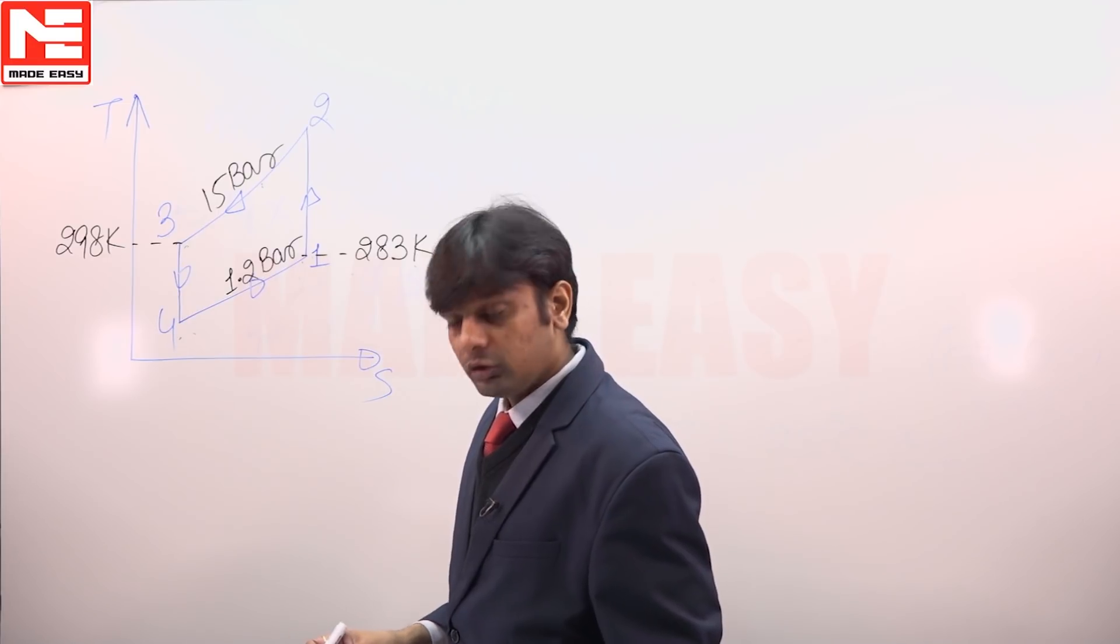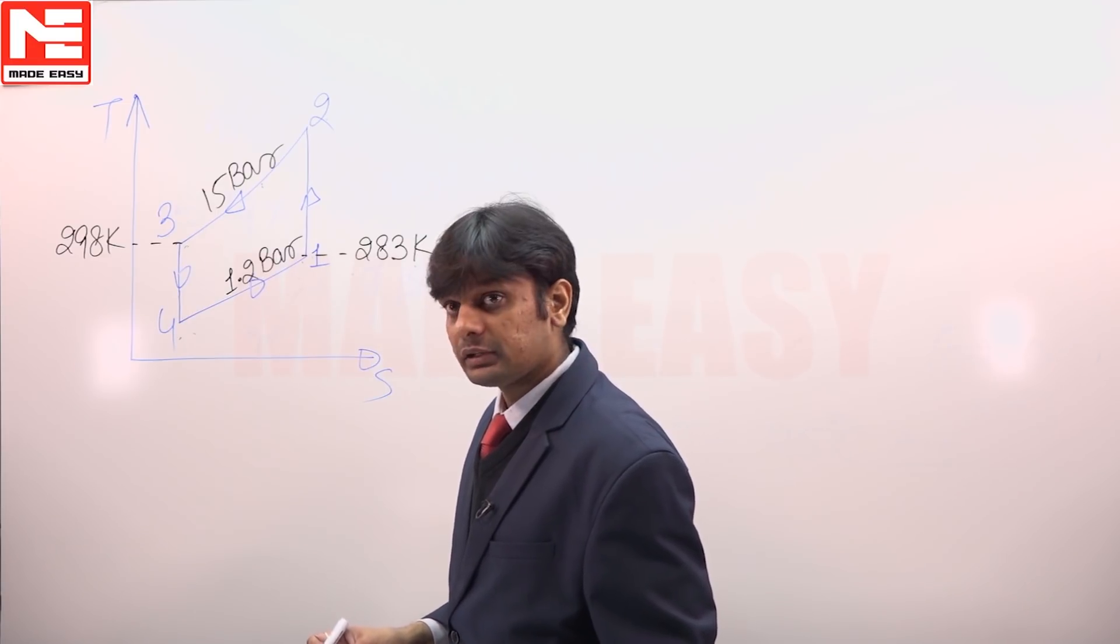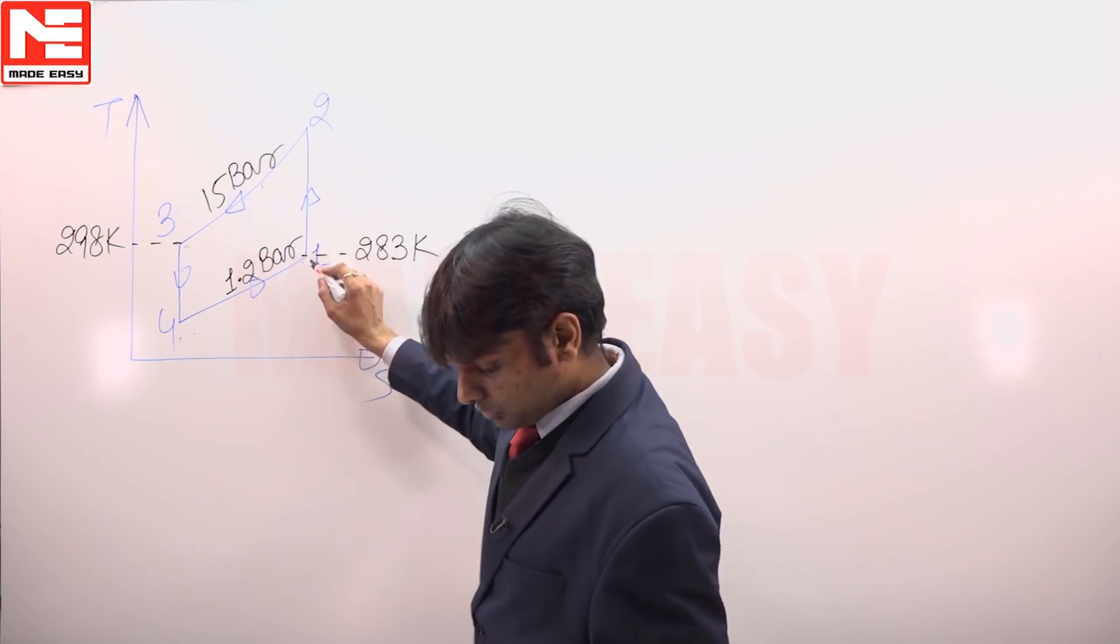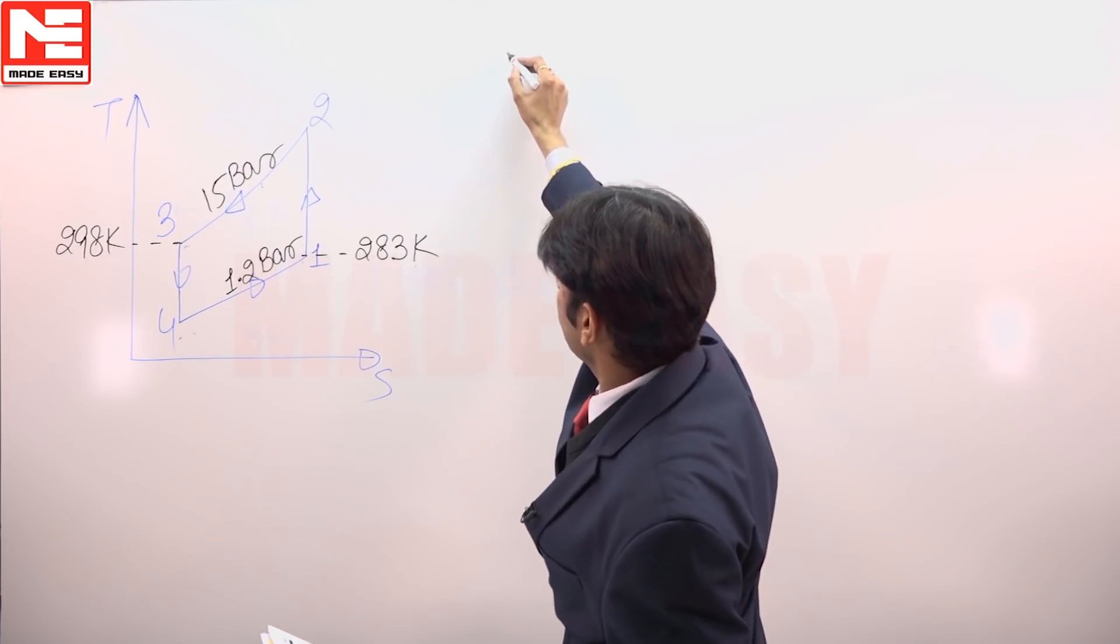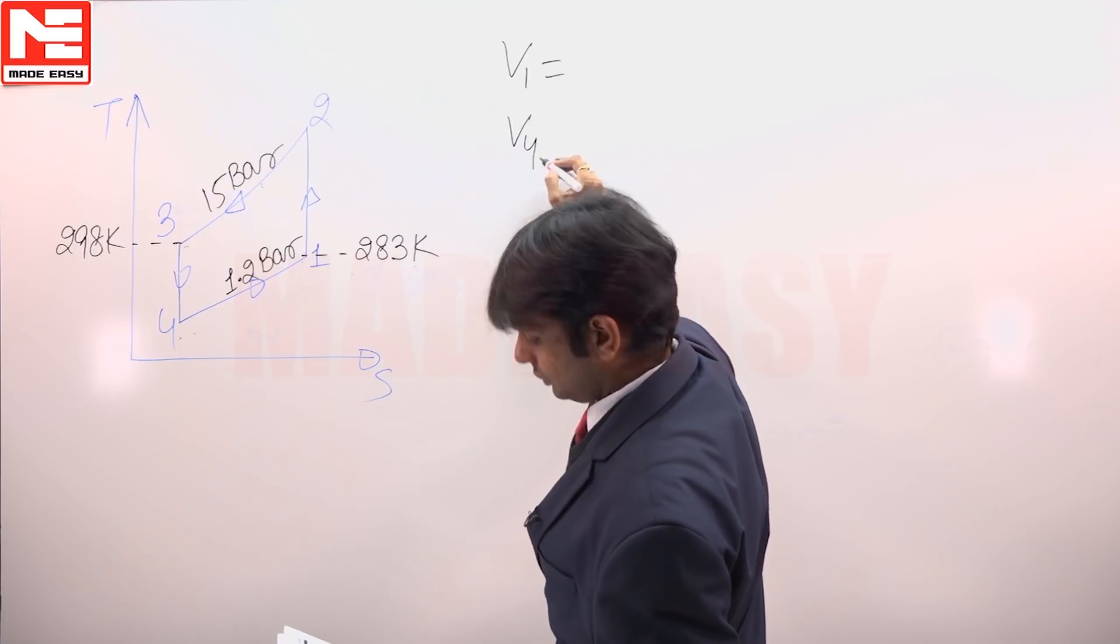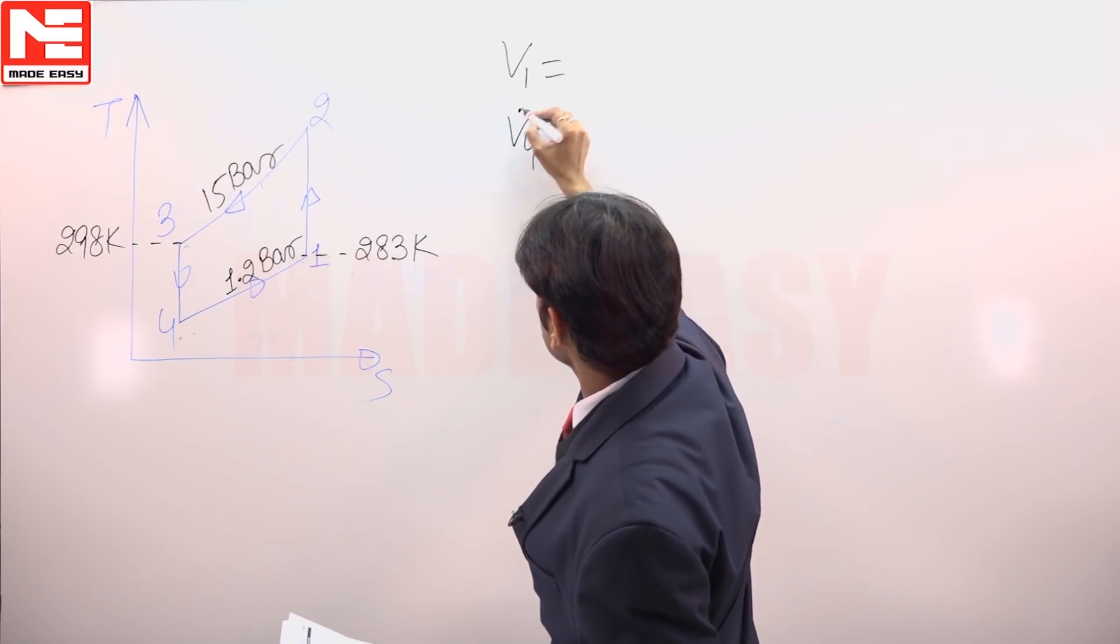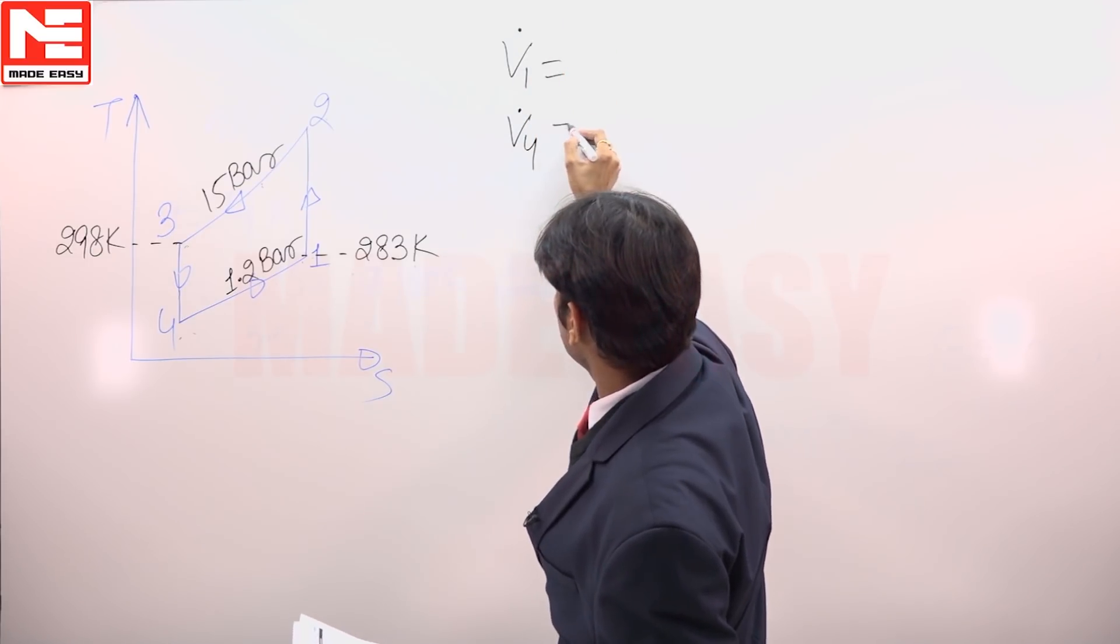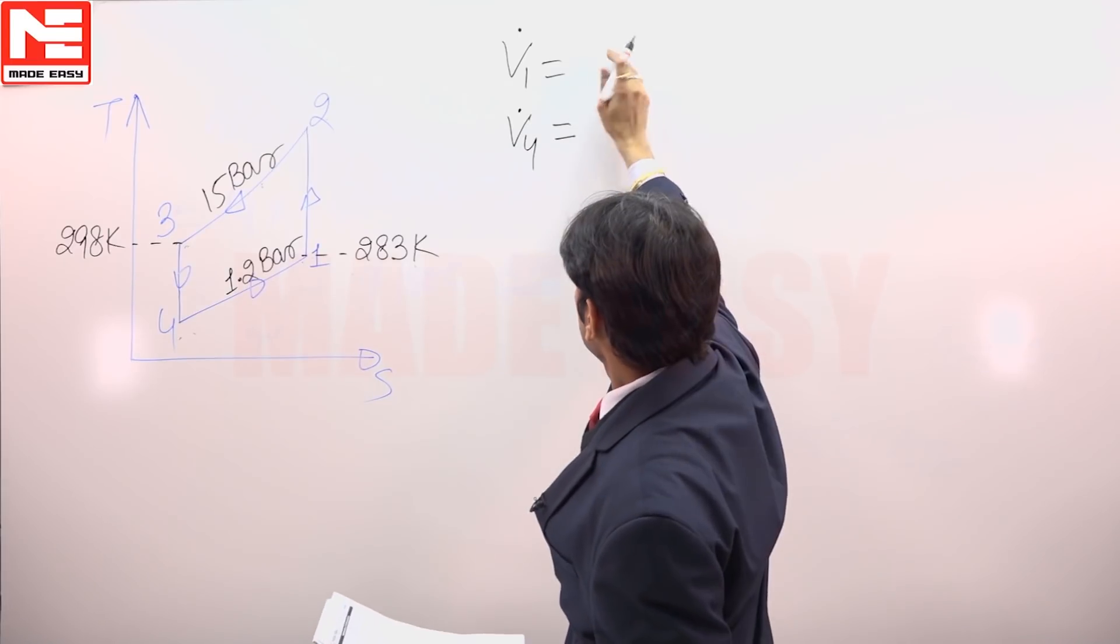We have to calculate the value of volume of air handled by the compressor and the expander, so we need to calculate the value of V1 and V4 in meter cube per second. So V1 dot and V4 dot.